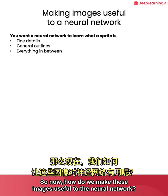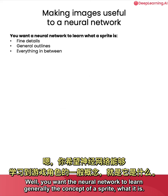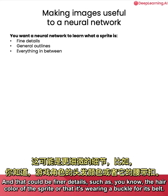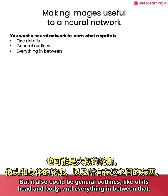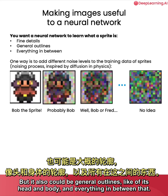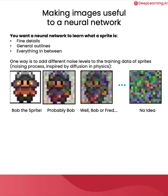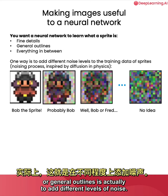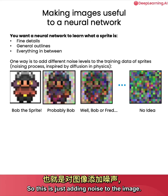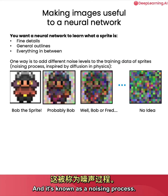So how do we make these images useful to the neural network? You want the neural network to learn generally the concept of a sprite — what it is — and that could be finer details such as the hair color of the sprite, or that it's wearing a buckle for its belt, but it also could be general outlines like of its head and body, and everything in between. One way to take your data and emphasize either finer details or general outlines is actually to add different levels of noise. This is just adding noise to the image, and it's known as a noising process.